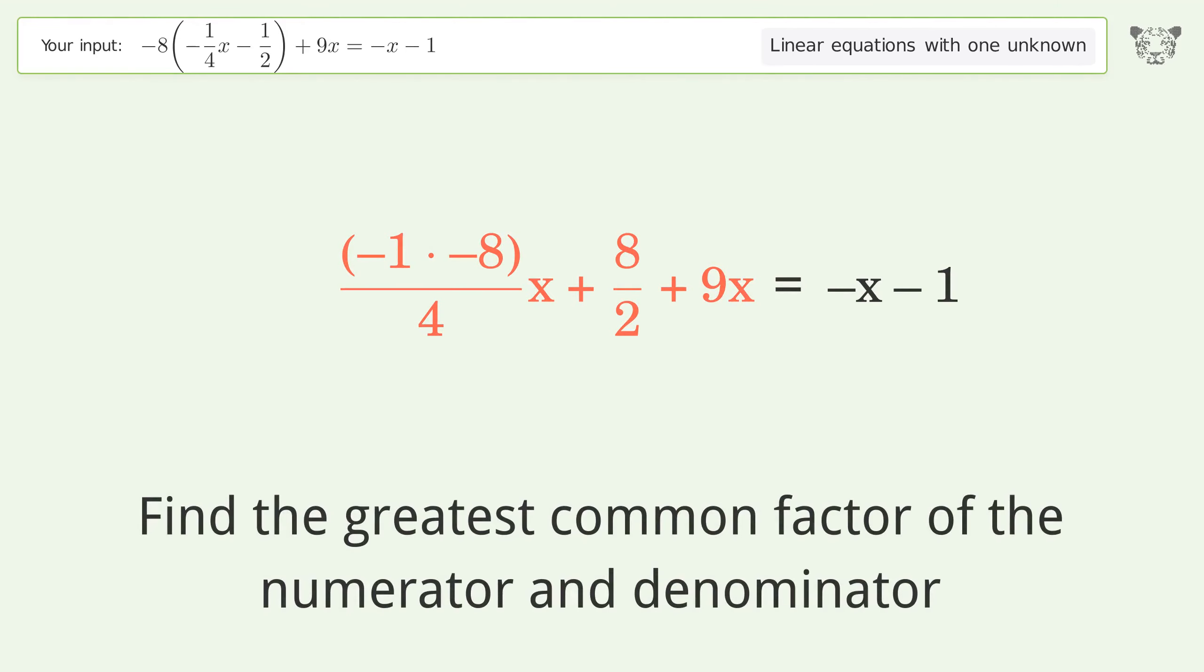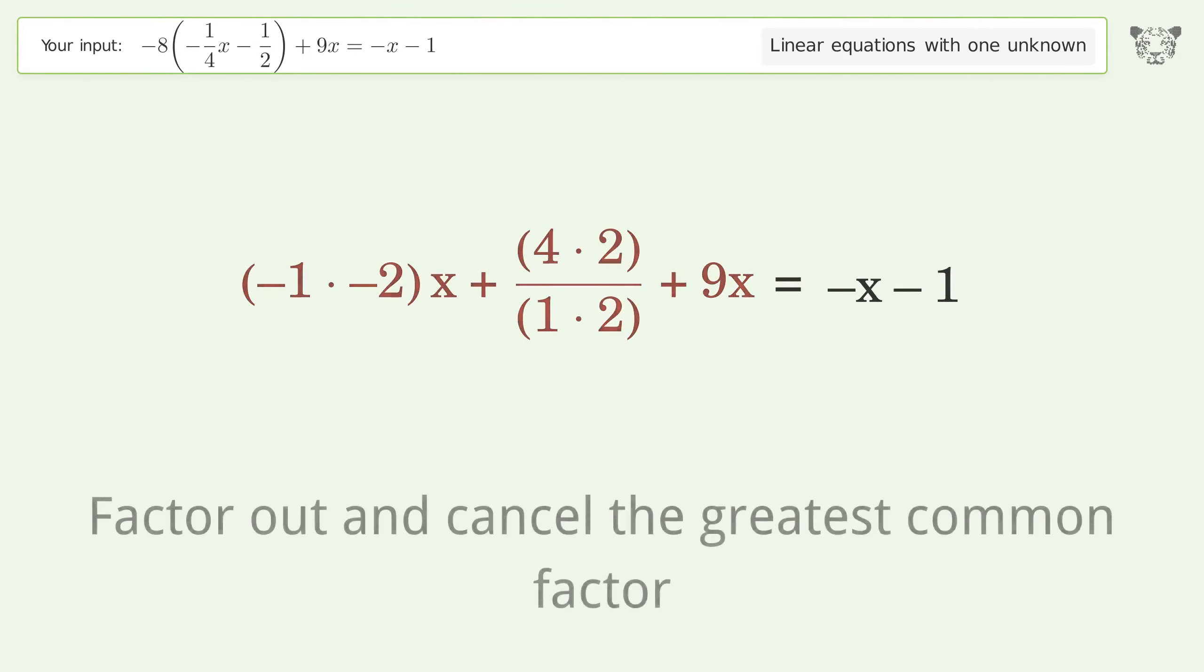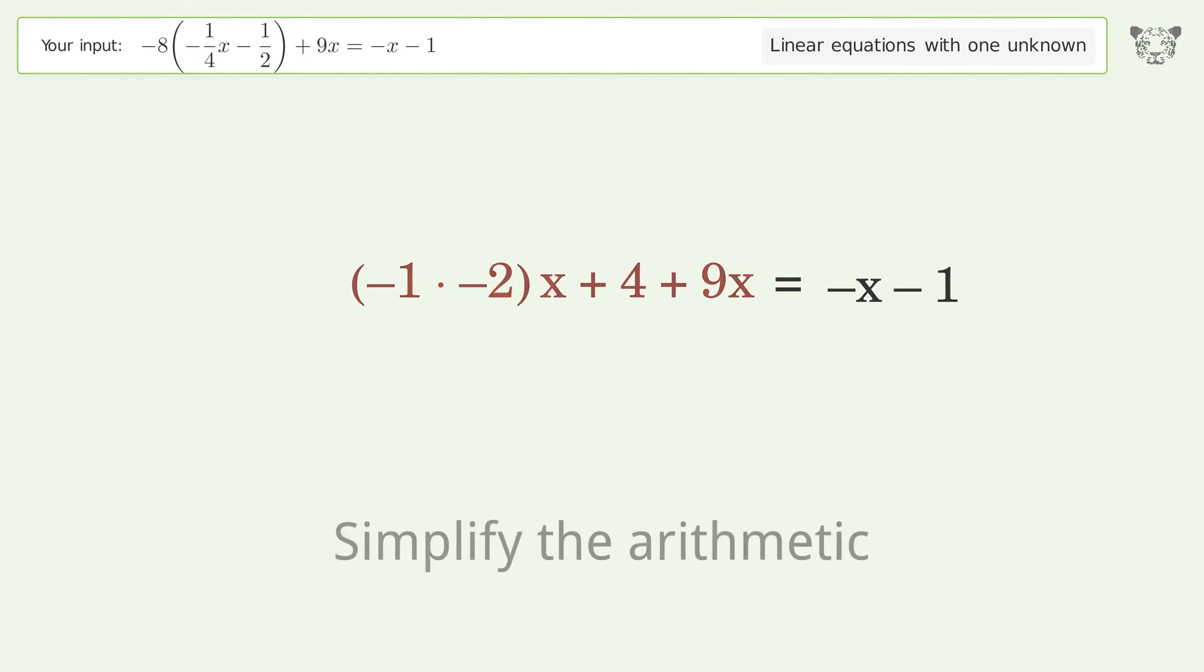Find the greatest common factor of the numerator and denominator. Factor out and cancel the greatest common factor. Simplify the arithmetic.